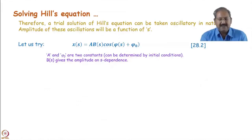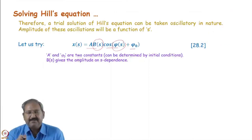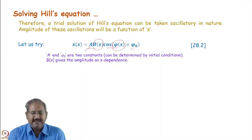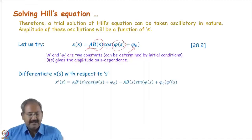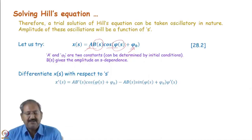We can write down the trial solution as x = A · B(S) · cos(φ(S) + φ₀). Because this is a second-order differential equation, we require at least two constants of integration — that is why A and φ₀ serve that purpose. A and φ₀ can be obtained using the initial conditions. Because this is our trial solution, we need to determine the nature of B and φ. To find that, we will put this trial solution into the Hill's equation.